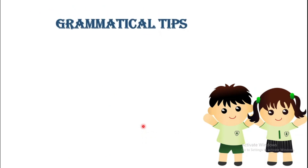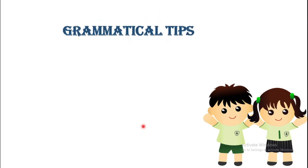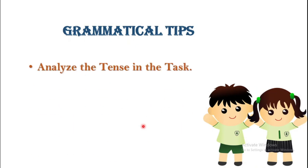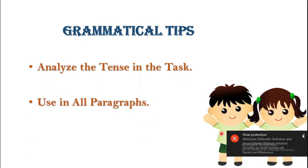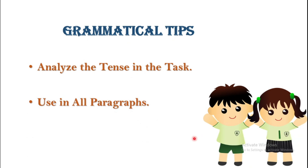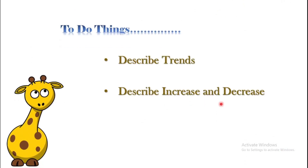In Task 1, the first step is to analyze the tense time given in the task, since your complete task depends on the given tense. You have to use the correct tense in all paragraphs — introduction, overview, and body paragraphs. In the overview and body paragraphs, you have to describe trends, identify increases and decreases in the data, and make comparisons. To do all these things, you will need to use particular tenses.